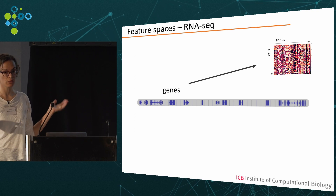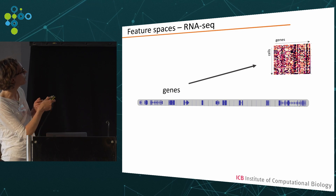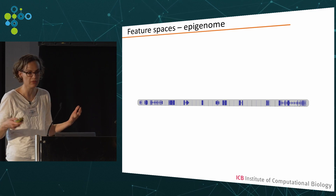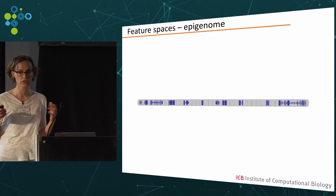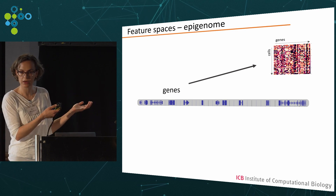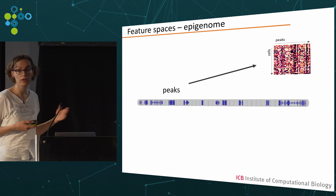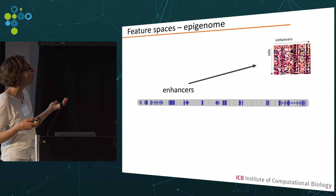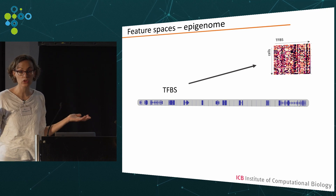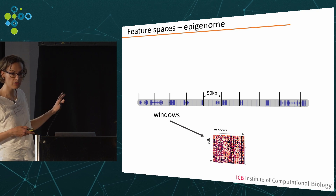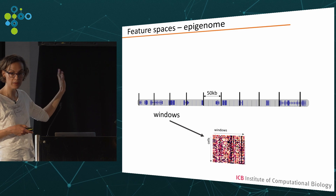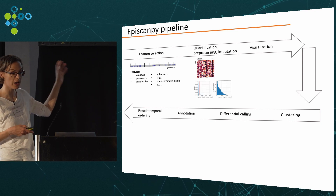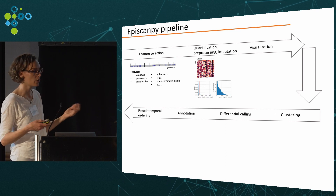When you do single cell RNA-seq, you don't worry about your feature space because you're measuring genes — you quantify per cell the expression of every gene. But once you measure the epigenome, you have whole genome information, so you need to decide what to quantify. In our pipeline you can use different feature spaces: genes, peaks for single cell ATAC-seq, promoters, enhancers, DNA methylation, transcription factor binding sites, topics — anything you can think of. You can also keep all the information by making windows of whatever size, depending on how much missing data you have, and then quantify those windows.